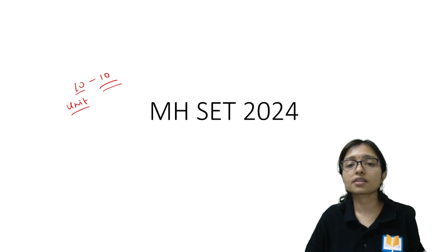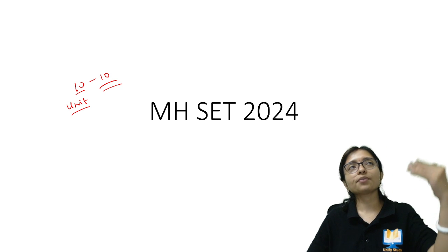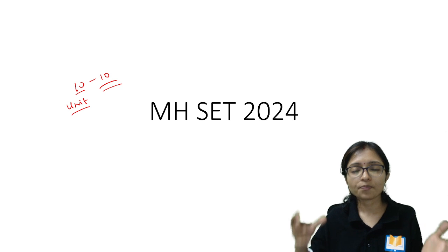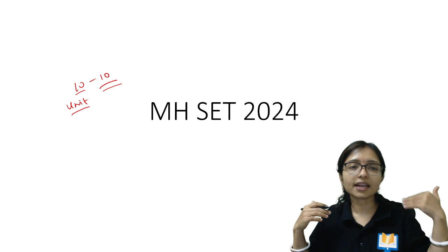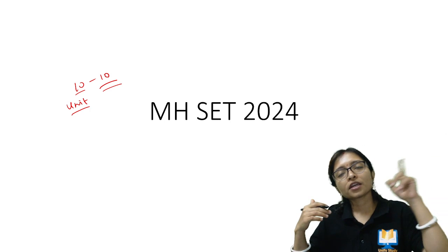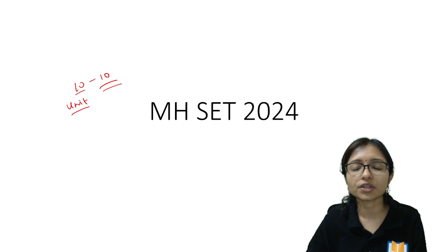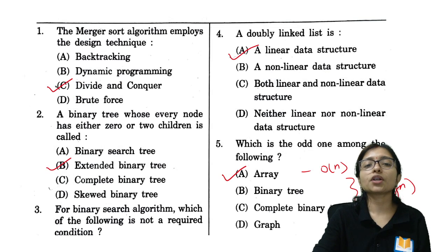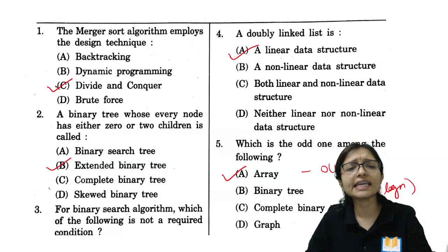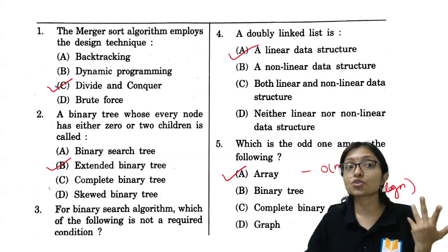Those who attempted questions unit by unit — first unit, then second, then third — may have faced difficulty. Don't do that. I always said: do the easy questions first, the quickly solvable questions first. I'm going to show you which questions could be answered quickly, within 30 seconds.